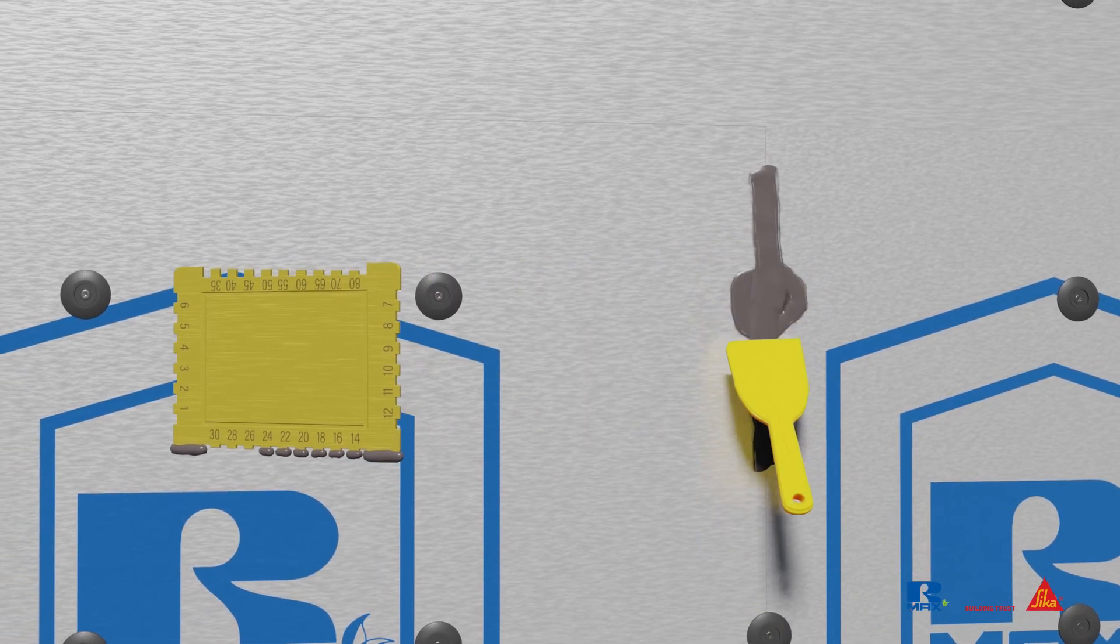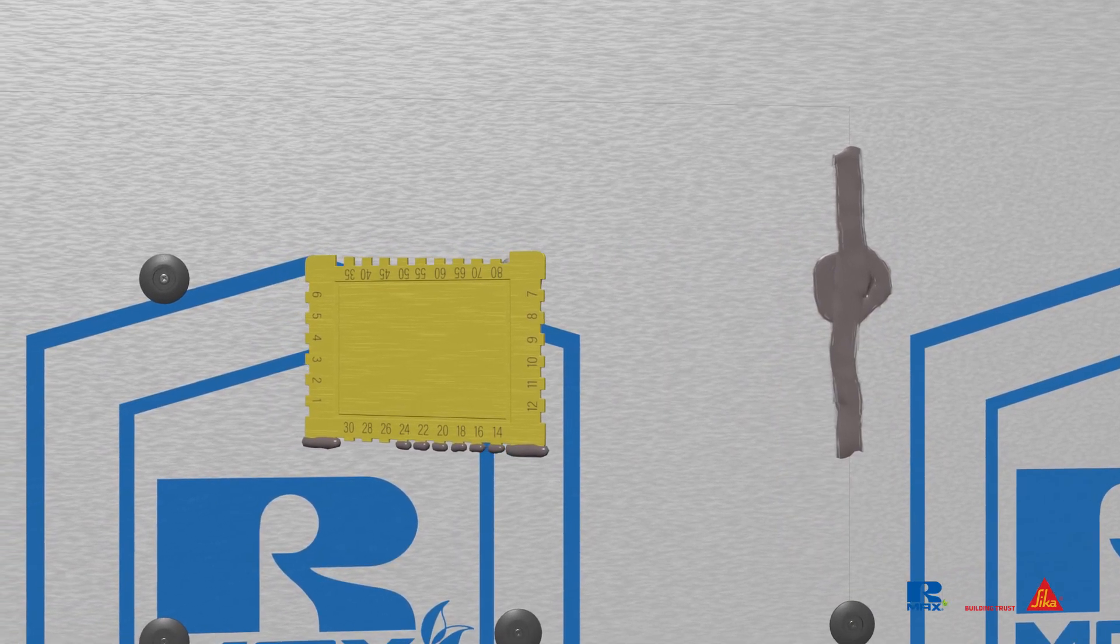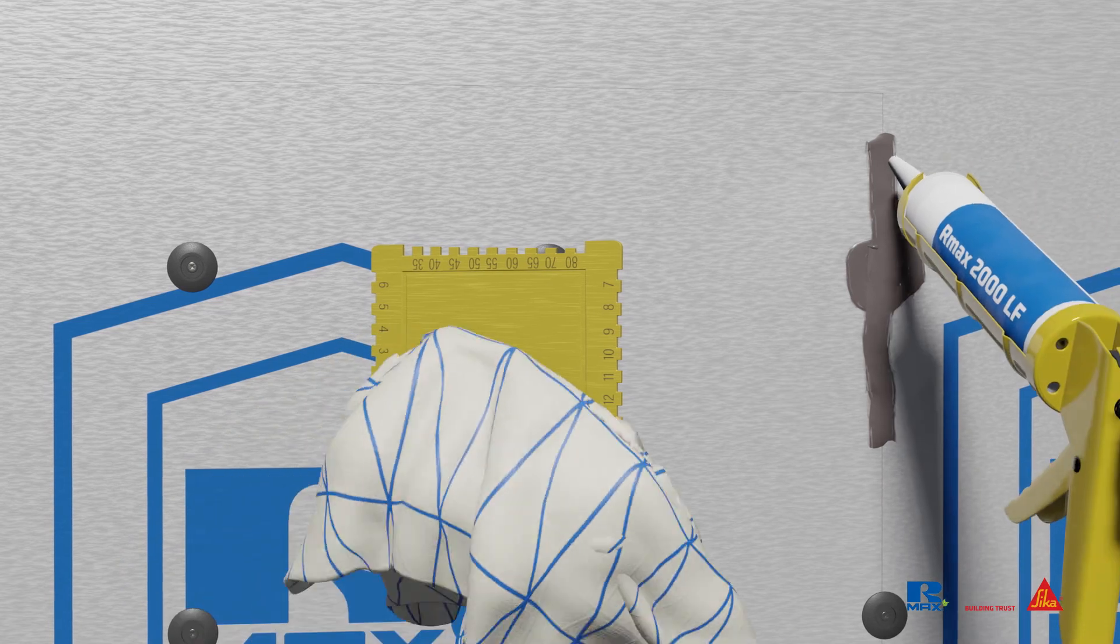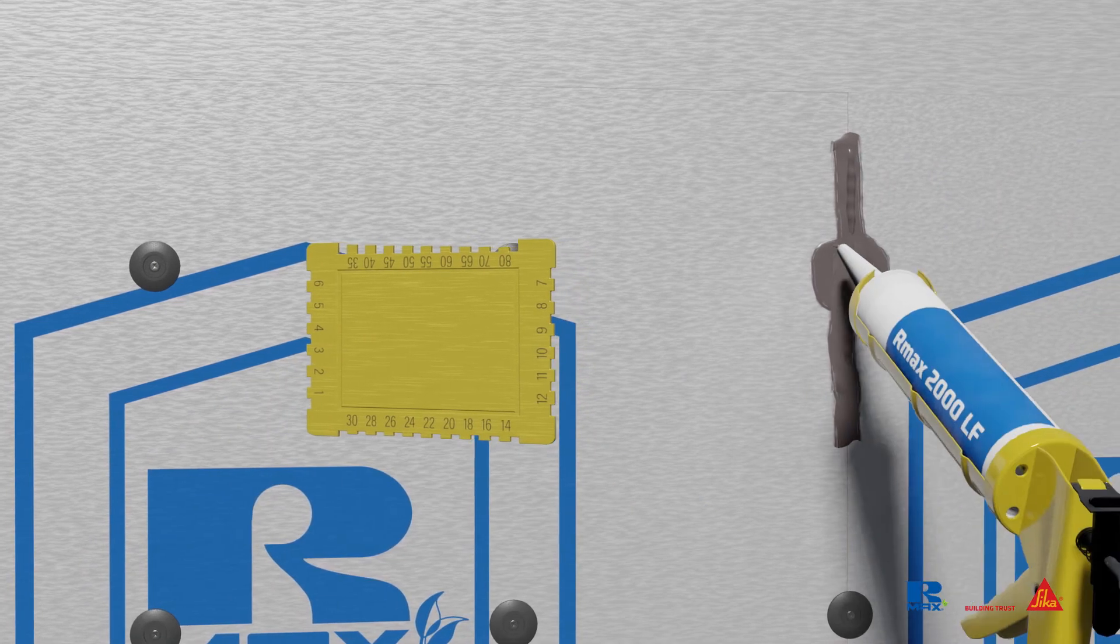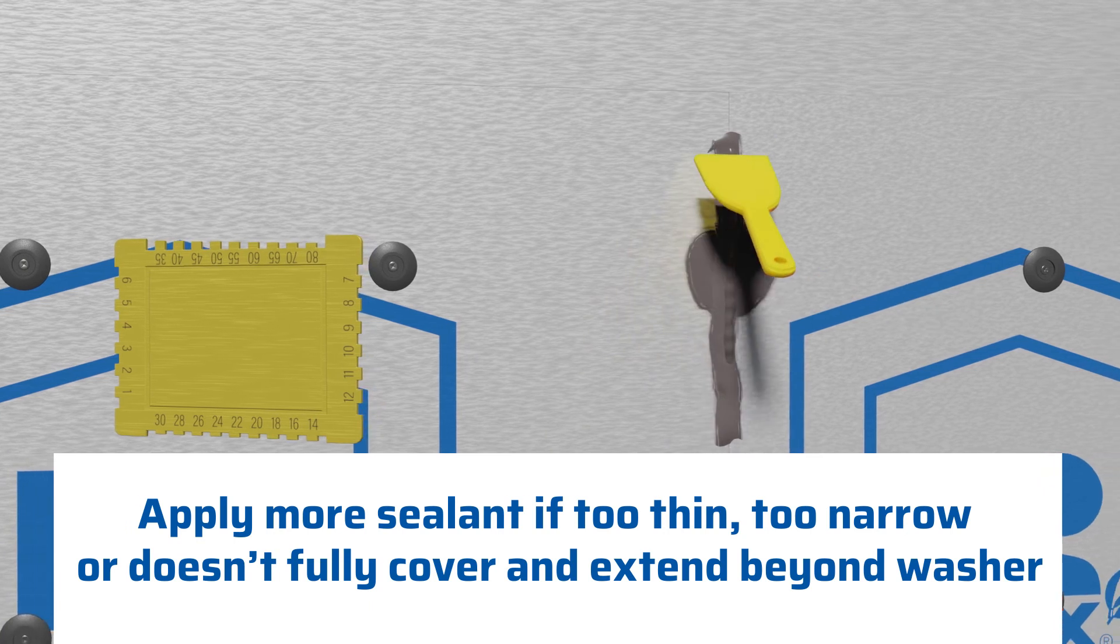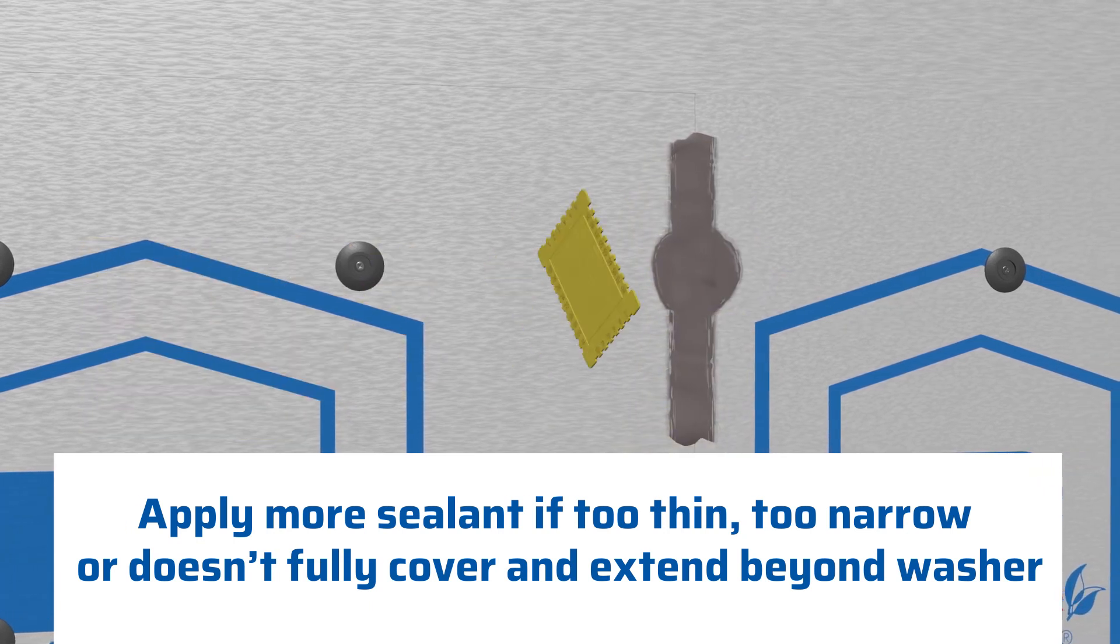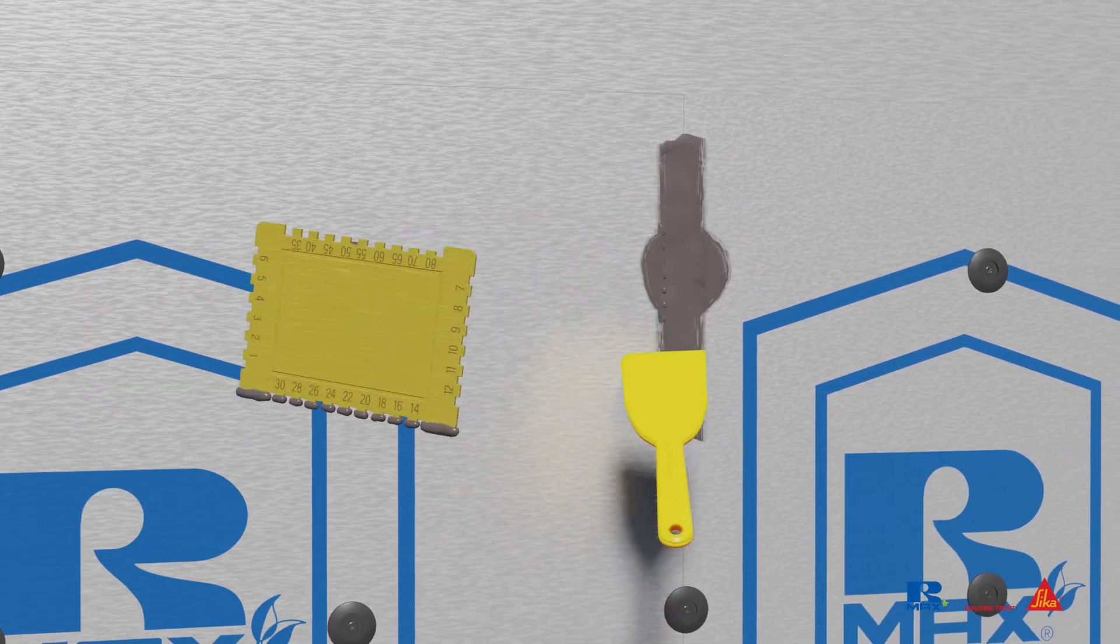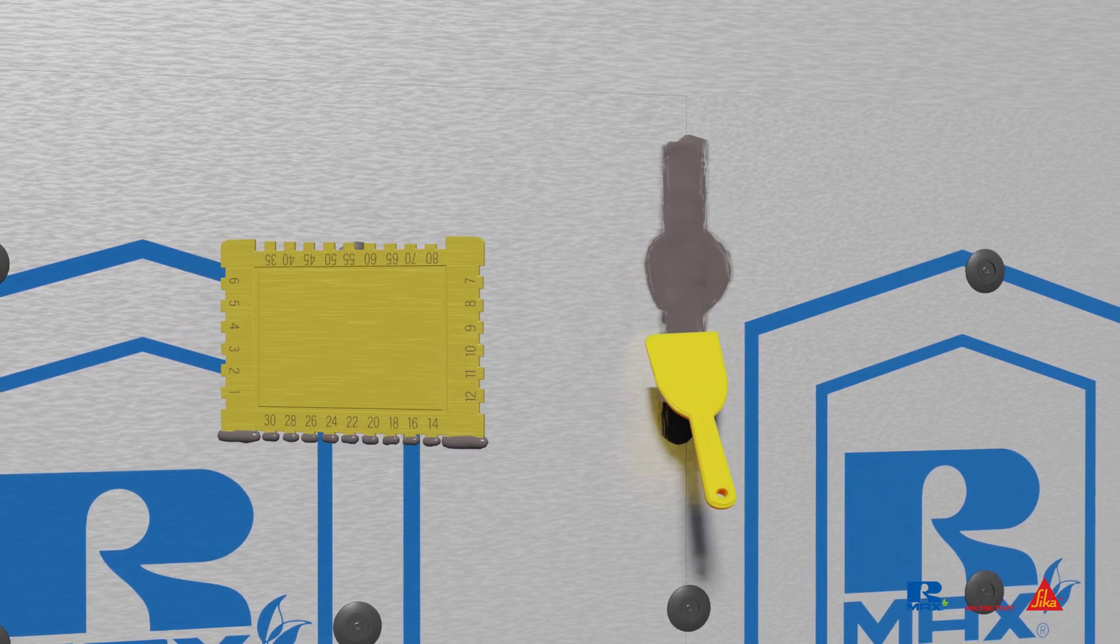With the knife, smooth the surface where the thickness gauge was inserted. Clean the gauge for the next check. If the material is less than 30 mils, apply more sealant following the steps described to ensure at least 30 mils is installed in the full width. Regularly check the thickness of the material to reduce callbacks for repairs.